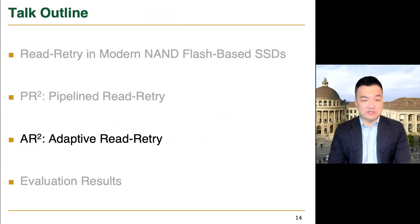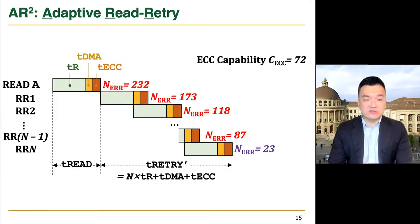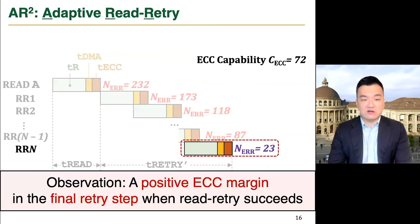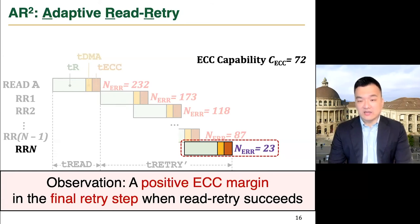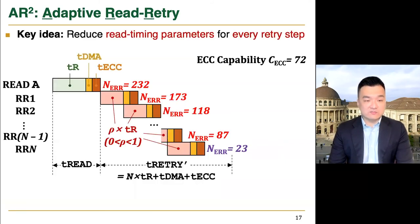Next, let me present our adaptive read retry. This figure shows our pipeline read retry mechanism, and we observe that there always exists a positive ECC margin in the final retry step when read retry succeeds. For example, we can see a large ECC margin since there are only 23 bit errors in the final retry step, while the ECC can correct 72 bit errors. ARScare exploits this ECC margin to reduce the read timing parameters for every retry step, which further reduces the read retry latency.